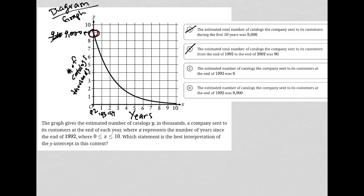Choice C, the estimated number of catalogs the company sent to its customers at the end of 92 was 9? No, these are in thousands, so that's not the answer either. Choice D, the estimated number of catalogs the company sent to its customers at the end of 1992 was 9,000. Absolutely yes. So choice D is the best answer here.